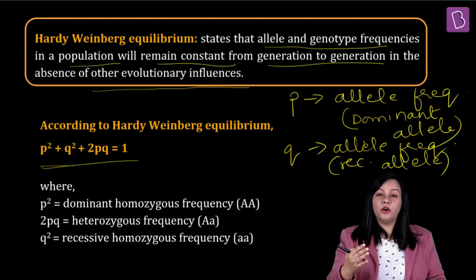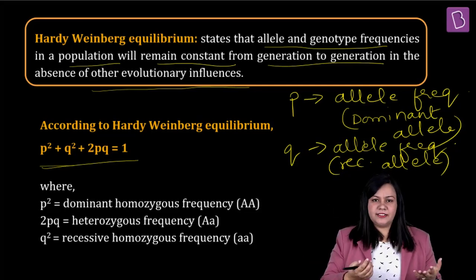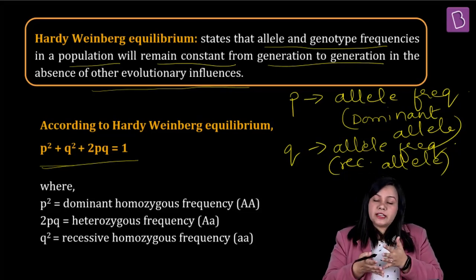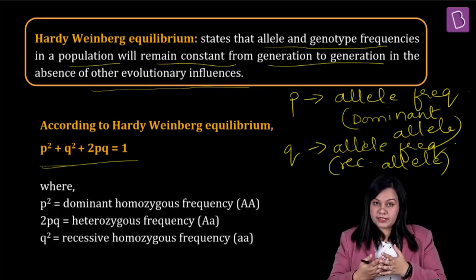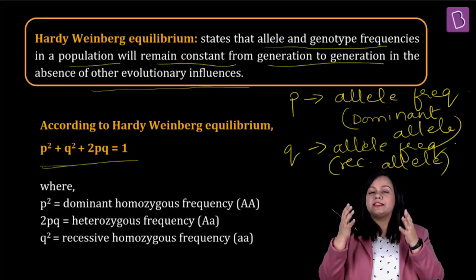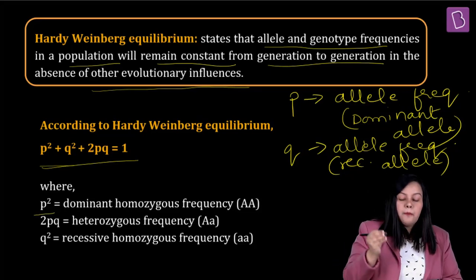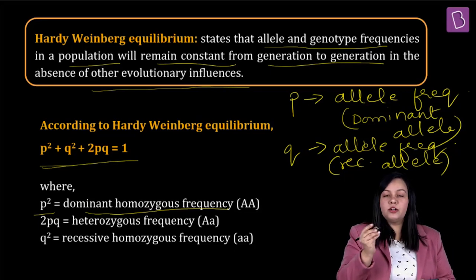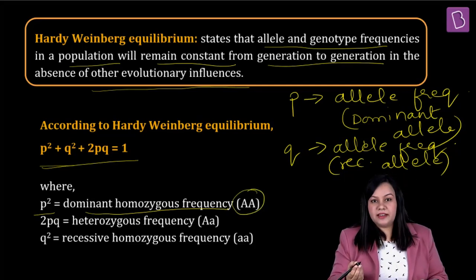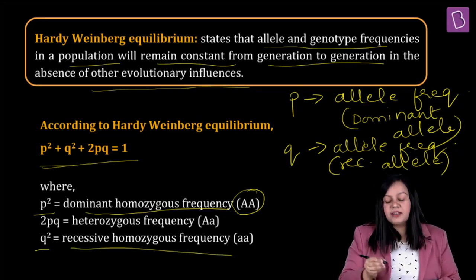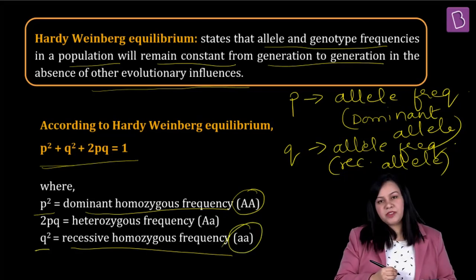The whole genetics concept is based upon the principle of dominance and recessiveness. Now, p² is the homozygous dominant frequency — it represents capital A, capital A frequency. Then q² is the recessive homozygous frequency, representing the allele frequency of the recessive allele. Then 2pq represents the heterozygous frequency — capital A, small a — and we multiply by 2 because whenever we do a cross, we usually get four combinations, out of which two are heterozygous.